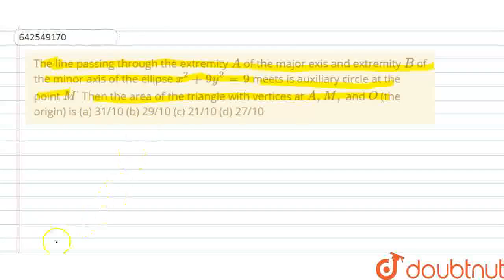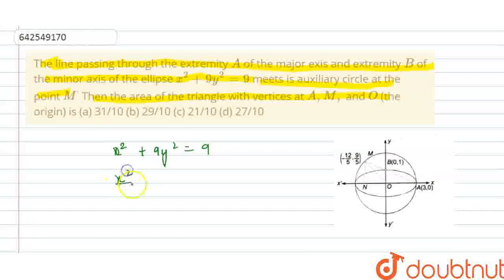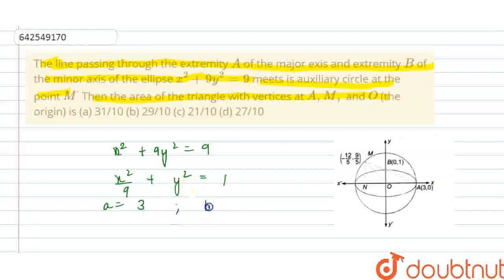Firstly, I'm drawing the diagram as per the given information. Now I'm writing down the equation of the ellipse, which is x² + 9y² = 9. Dividing the whole equation by 9, I get x²/9 + y² = 1. Here the length of the semi-major axis is a = √9 = 3, and the length of the semi-minor axis is b = √1 = 1.